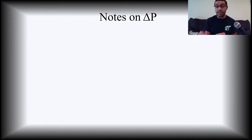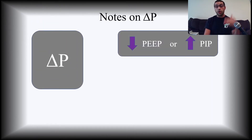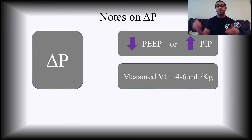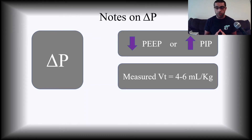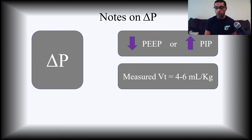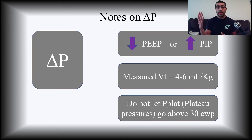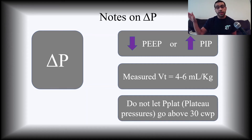Notes on Delta P: you can lower the PEEP or increase the PIP. That delta is going to give you back a measured tidal volume in the measured value section of the vent. You're looking for 4 to 6 mls per kg — that doesn't change just because we're in pressure control. That's a good indication that we're using lung protective strategies. Also, don't let your Pplat go above 30. You can do an inspiratory hold in this mode to check your Pplat — keeping it under 30 reduces the risk of barotrauma.